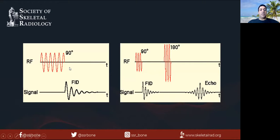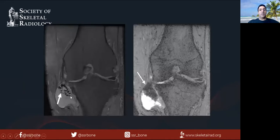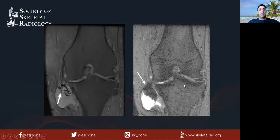There is a GRE type sequence which has less than 90 degree flip, and what you get is a free induction decay — very fast imaging, but not so good looking images — versus a spin echo type image where there's a 90 degree flip followed by 180 degree refocusing pulses, giving you a better looking image. Here you can see a spin echo image showing a tenosynovial giant cell tumor, versus a GRE type image which has a lot of susceptibility artifacts from PVNS.